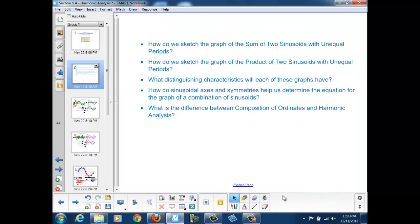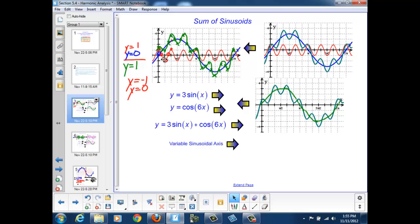Let's see if we've answered all our questions. How do we sketch the graph of the sum of two sinusoids with unequal periods? Well, if we're sketching the graph of the sum, we look for critical points and add the values at those critical points. So, we add the amplitude of one to the amplitude of the other, and we should end up with a graph with a varying sinusoidal axis.